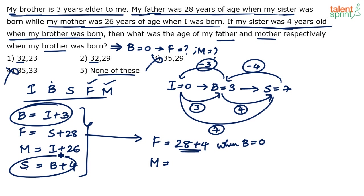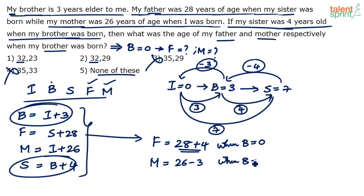Mother was 26 years old when I was born. I was born 3 years after my brother, so when my brother was born my mother was 26 minus 3 = 23 years old. So mother's age when brother was born is 23, making option 1 the answer: father 32, mother 23.